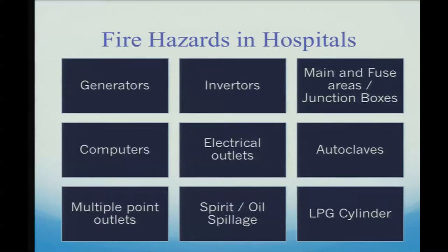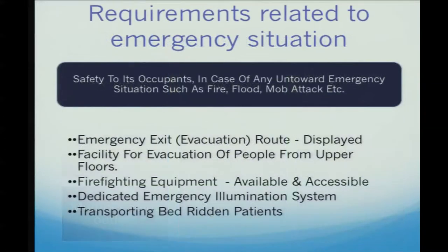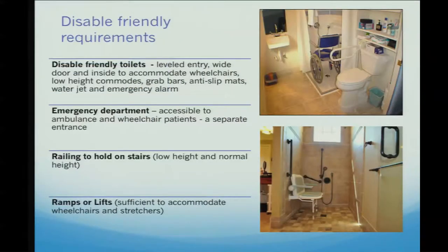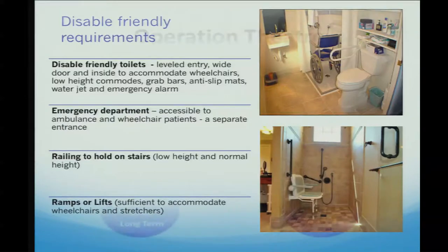Take care of fire hazards in hospitals — generators, inverters, and computers are main areas where fire can start, so a good maintenance schedule is essential. Emergency requirements include trained employees for evacuation, firefighting equipment in place, and proper emergency illumination. You also need disabled-friendly facilities — most patients are from vulnerable age groups, so disabled-friendly toilets, emergency department accessible to ambulances and wheelchairs, and ramps and lifts are required.